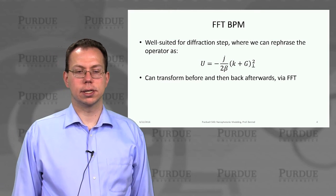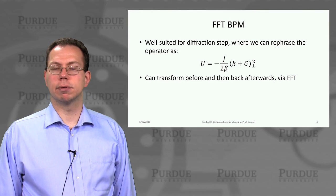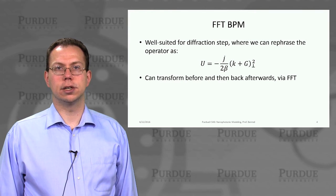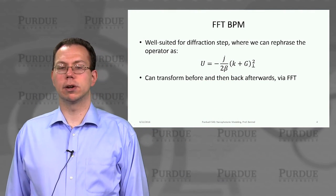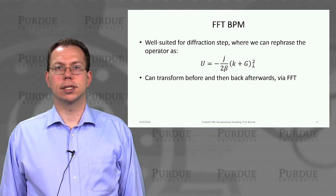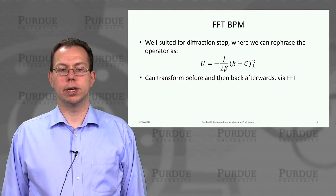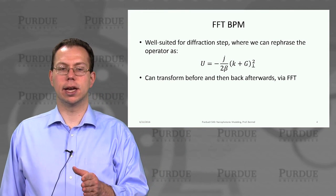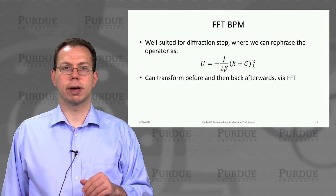How does the fast Fourier transform approach work? It's well suited for at least one of the steps — the diffraction step — because we can rewrite the u that appears in e to the hu over 2 as something as simple as minus j over 2 beta times k plus g-perpendicular squared. That allows us to take something otherwise messy and write it as a scalar quantity. The trick is that we transform into the Fourier domain to propagate the linear phase shift, then back into FFT to propagate the diffraction again, and keep going back and forth.